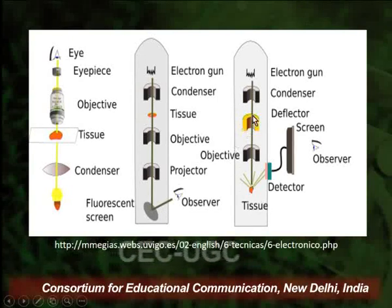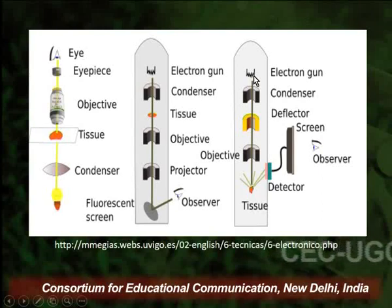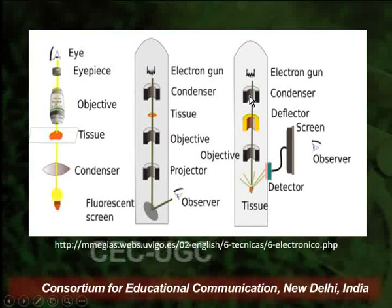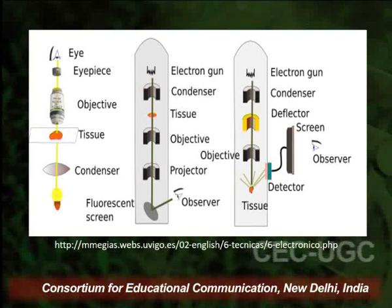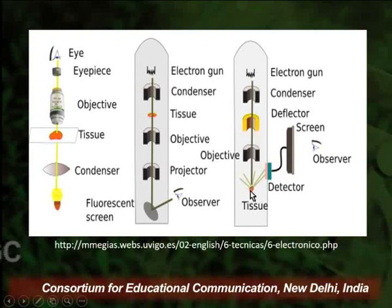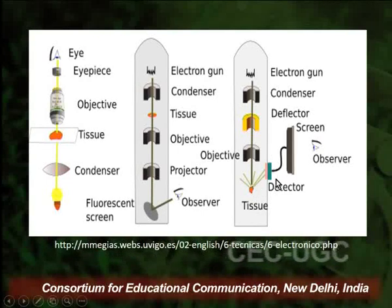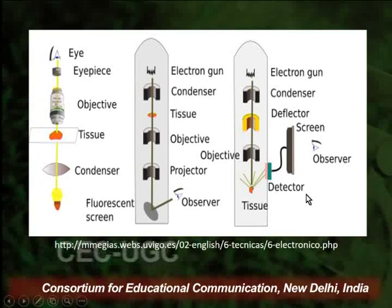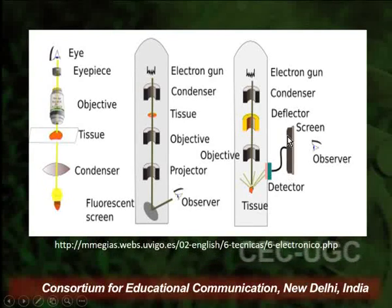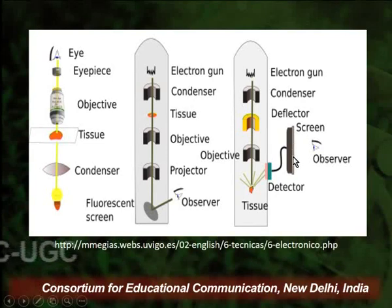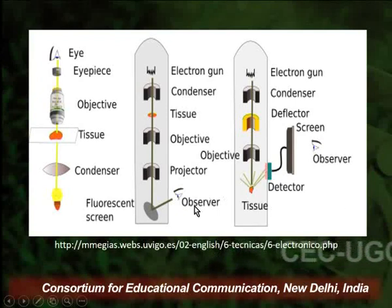In scanning electron microscopy also, electron beams are generated from an electron gun. Various condensers and lenses direct the beams, which then fall on the tissue, are deflected, and these deflected beams are detected by a very sensitive detector. These detectors create a computer-generated image observed on a screen. So in electron microscopy, we never get exposed to an electron beam directly.